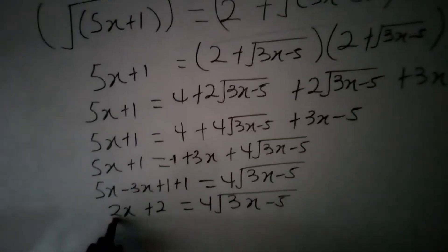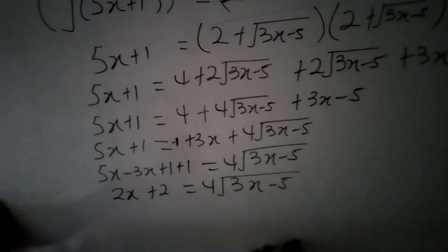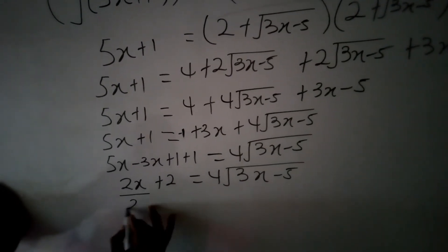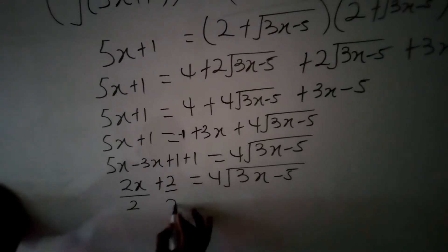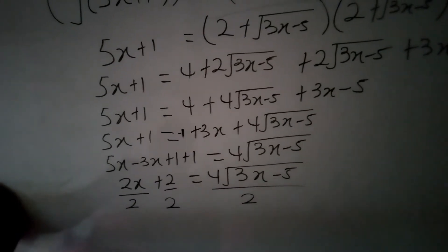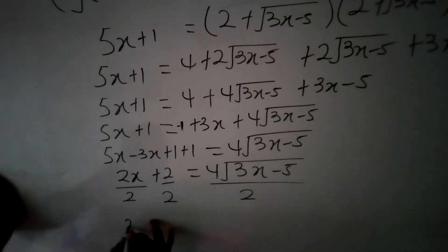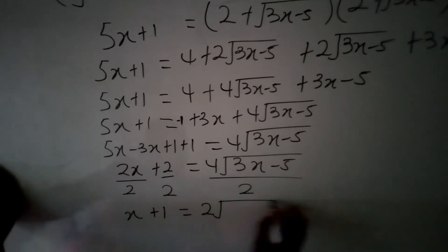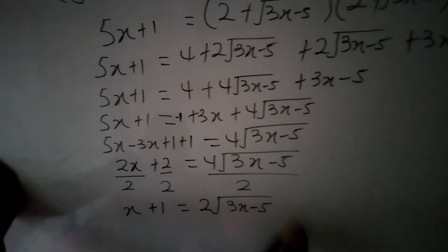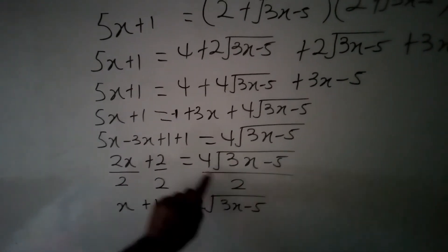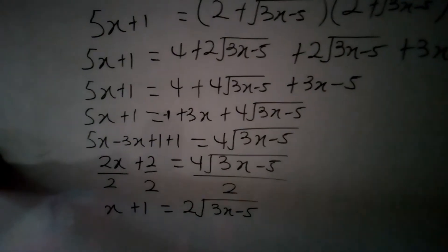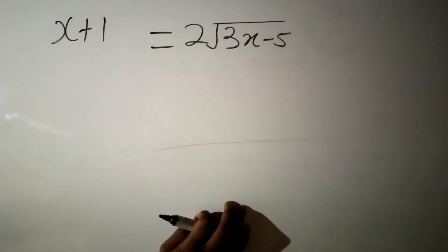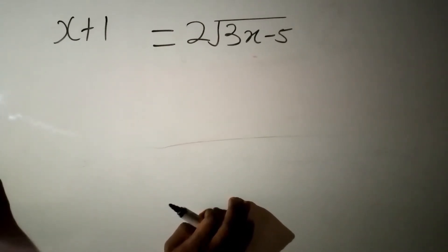This gives us 2x plus 2 equal to 4 root of 3x minus 5. Since we have multiples of 2, we divide everything by 2: the first term divided by 2, the second term divided by 2, and the other term divided by 2. This gives us x plus 1 equal to 2 root of 3x minus 5.